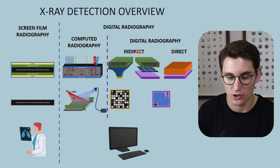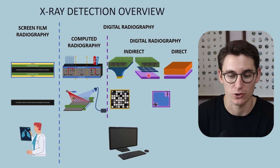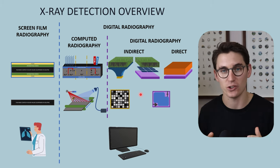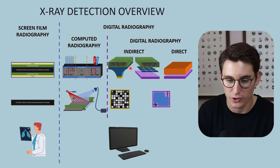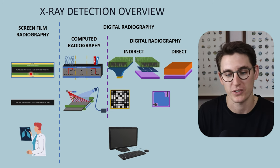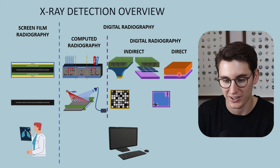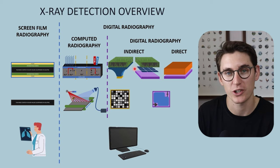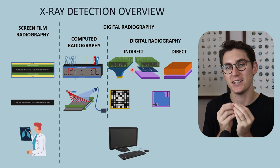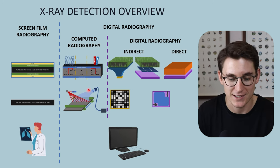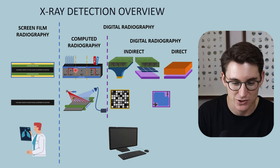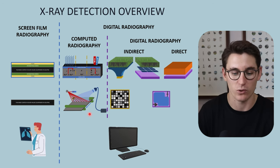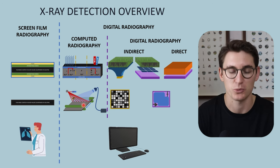We can also subdivide these systems into those that require scintillation and those that don't. Scintillation is the process of converting x-ray energy into light, and that light energy is then used to create our x-ray image. Our indirect digital radiography system and our screen film radiography system both require scintillation, while computed radiography and direct digital radiography do not. There is also a related process called phosphorescence, where x-ray energy is later converted into light — when there's a delay in conversion of x-rays to light, we call it phosphorescence. This is a process we will look at when we cover computed radiography.